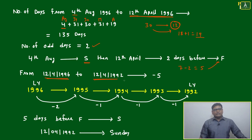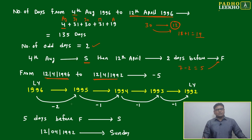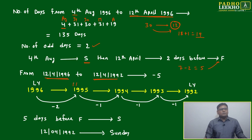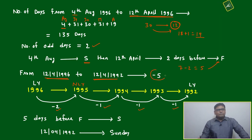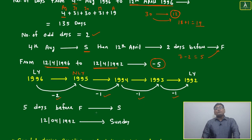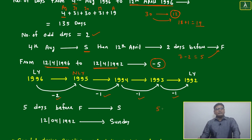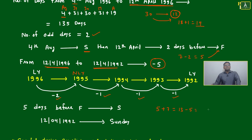Now from 12th April 1996 to 12th April 1992: 1996 to 1995 is leap year to non-leap year, so minus 2; 1995 to 1994 non-leap to non-leap, minus 1; 1994 to 1993, minus 1; 1993 to 1992, minus 1. Total: minus 5. So we need five days before Friday.